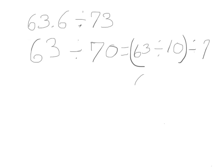63 divided by 10 is 6 and 3 tenths. 6 and 3 tenths divided by 7. I know 63 divided by 7 is 9, so 6 and 3 tenths divided by 7 is 9 tenths. There would be 9 tenths pounds of rice in each bag.